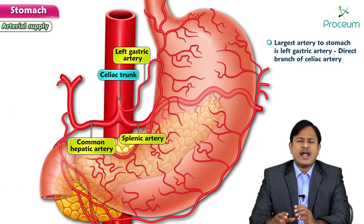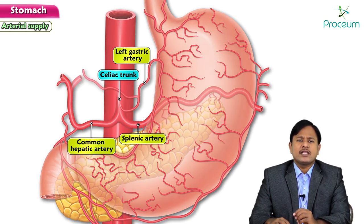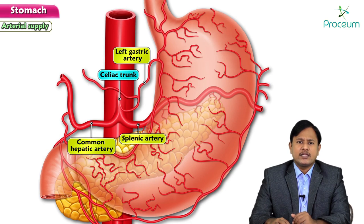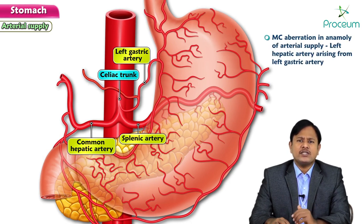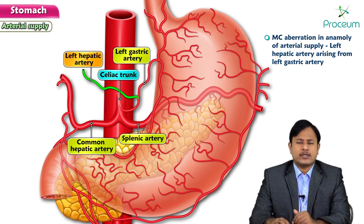The largest artery to the stomach is the left gastric artery, which is a direct branch from the celiac trunk. An important point to remember is the most common arterial aberration: the left hepatic artery arising from the left gastric artery, rather than its normal origin.